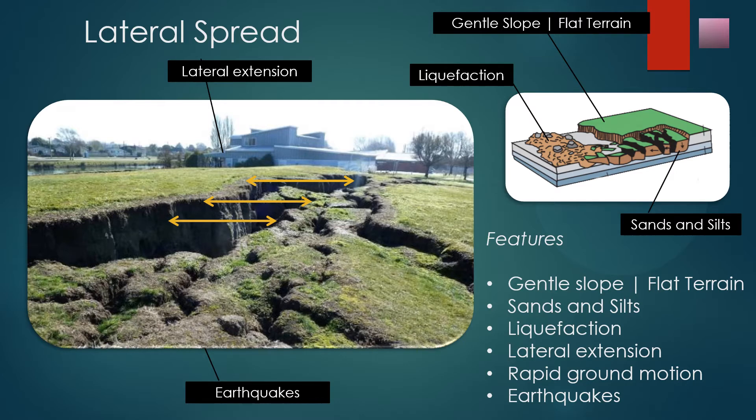When coherent material, either bedrock or soil, rests on materials that liquefy, the upper units may undergo fracturing and extension, and may then subside, translate, rotate, disintegrate or liquefy and flow. Lateral spreading in fine-grained materials on shallow slopes is usually progressive. The failure starts suddenly in a small area and spreads rapidly. Often the initial failure is a slump, but in some materials movement occurs for no apparent reason.